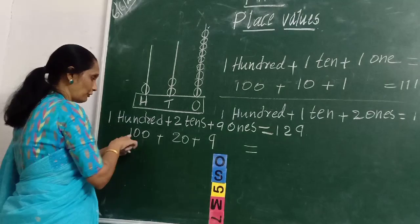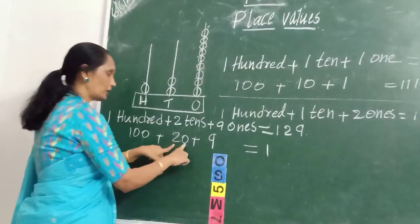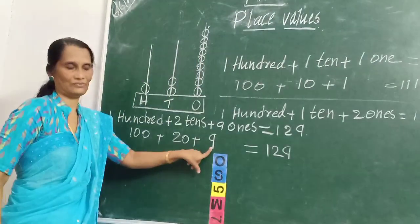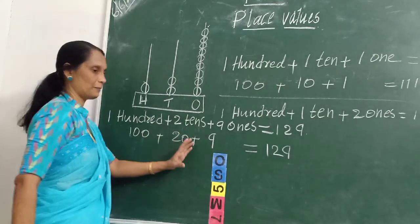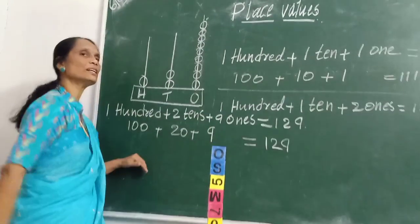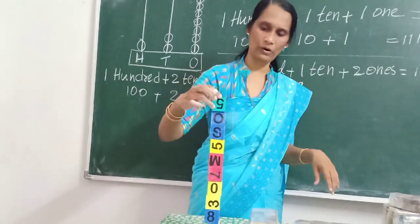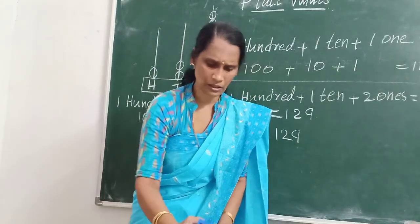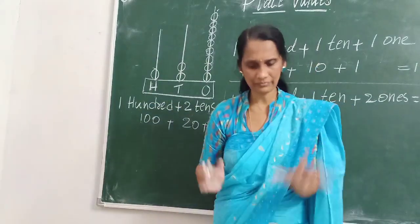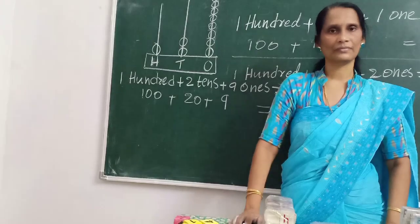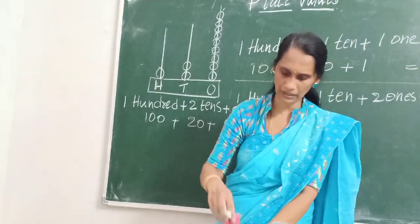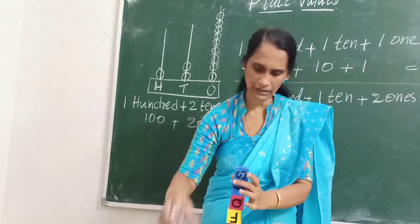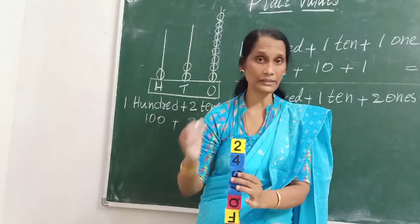We can go on adding up the numbers. If there is 1 more, we will replace all the ones with another ten block. It becomes 130. Then 131, 132, 133, 134, 135, 136, 137, 138, 139.